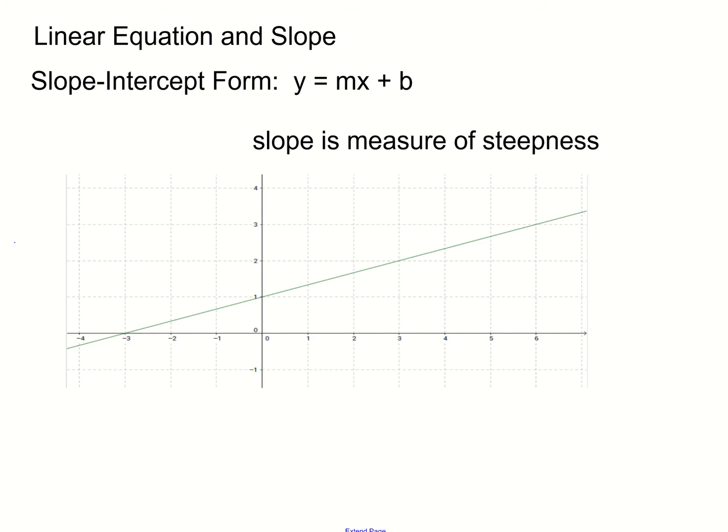If you want to find the slope of this line, remember that slope is the measure of steepness — it's how steep the line is. If the line is flat like the ground, it's going to have a slope of zero. If it inclines from left to right going up, it's going to have a positive slope. If it's going from left to right downward, that's a negative slope — it's going downhill.